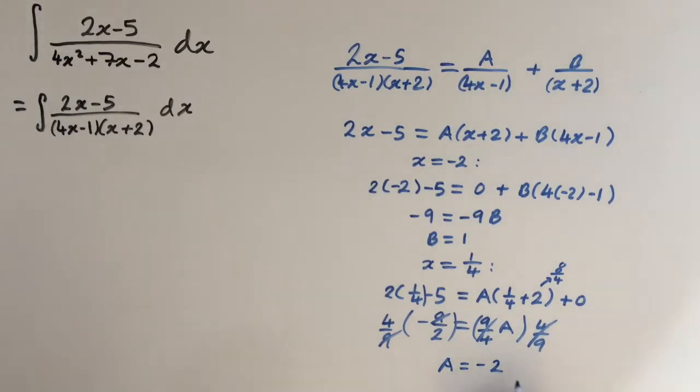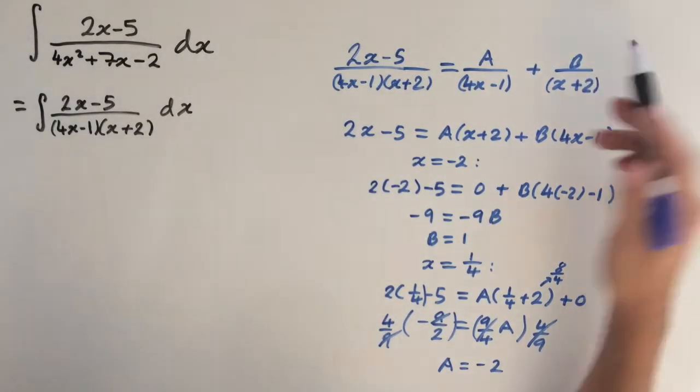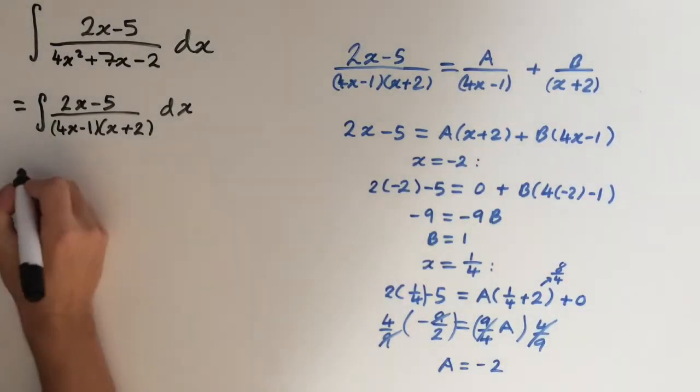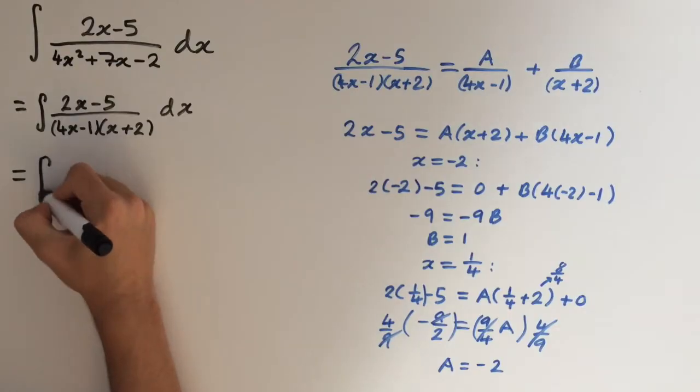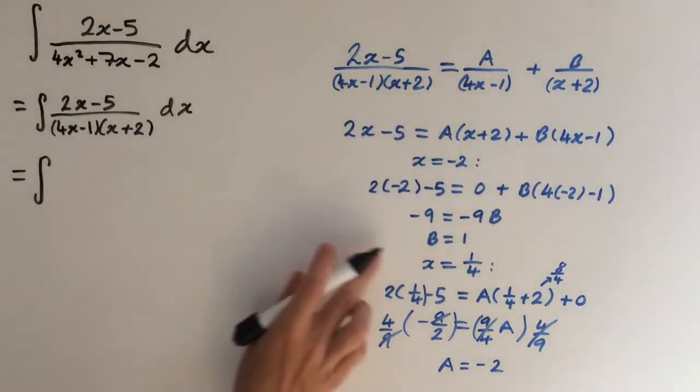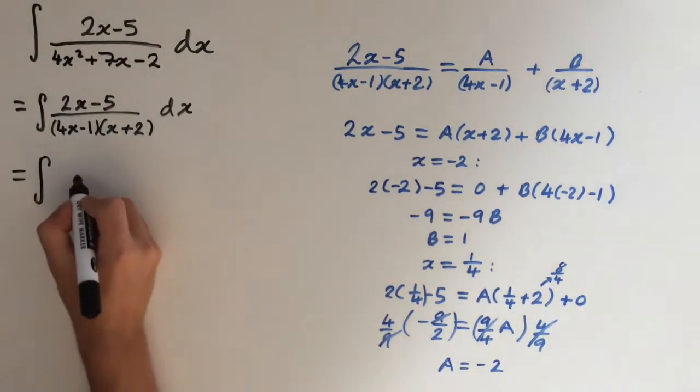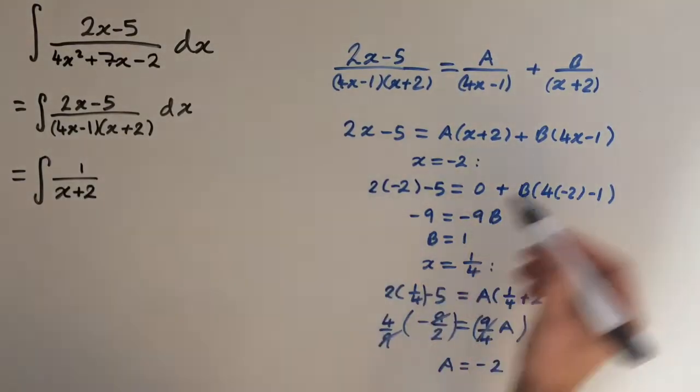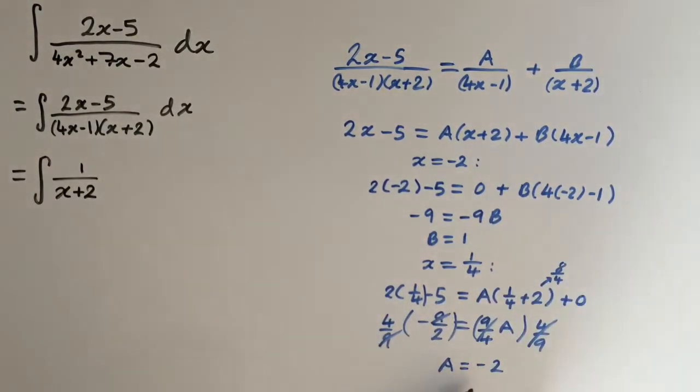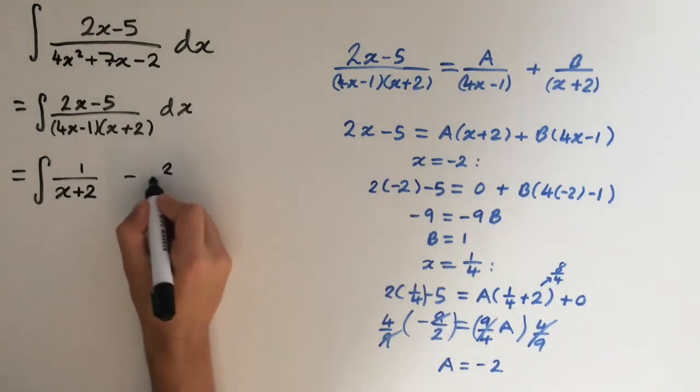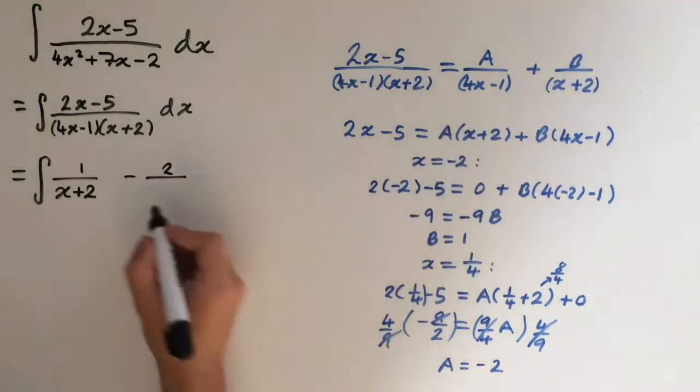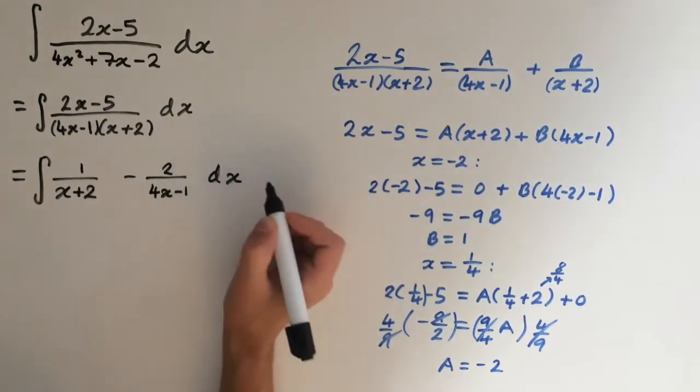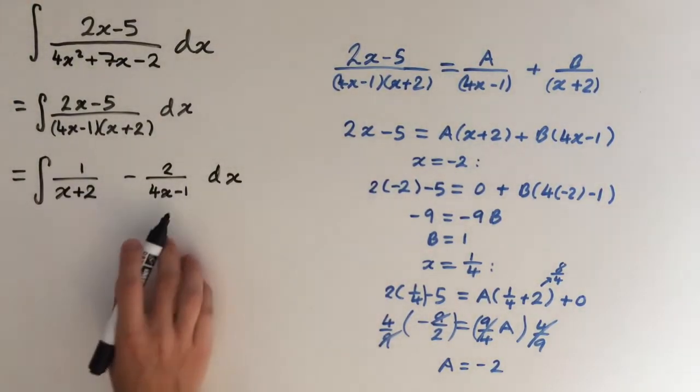So now we want to sub these back in the integral. So the integral is going to equal, so if I do B first because it's positive, so 1 over x plus 2. And then minus 2 over 4x minus 1. So now we've got two separate fractions, and we can integrate these.